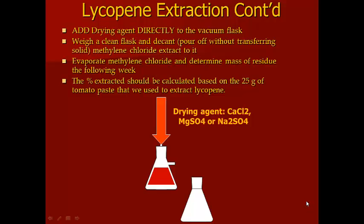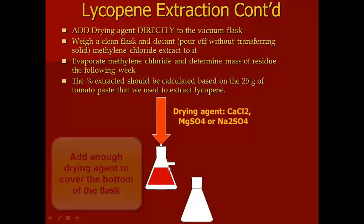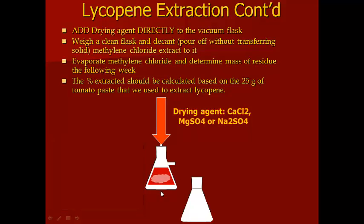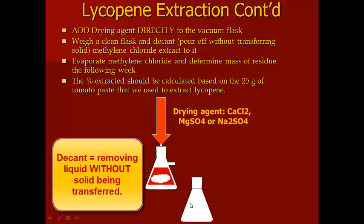With the methylene chloride extract in hand, you want to first add your drying agent — either calcium chloride, magnesium sulfate, or sodium sulfate — directly to the vacuum flask. Just remove the funnel and add the drying agent directly to your flask. You just want enough drying agent to cover the bottom of the flask; there's no measured or specified amount.